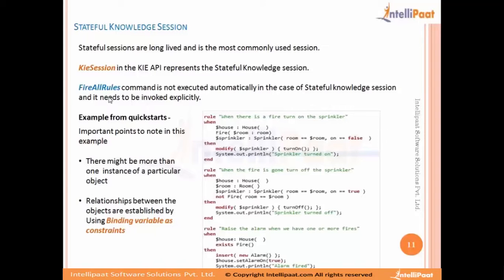In the previous example, even though we inserted multiple instances of data, we only had one object type — the claims object — and we were able to execute in batch mode two particular instances. But here there might be a scenario where we have multiple object types, where there are two object types with one instance of each, and we need to understand how the rule engine works in that case.